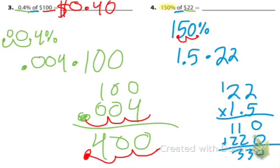But we need to move the decimal over 1 time. So move it over once. The answer is $33.